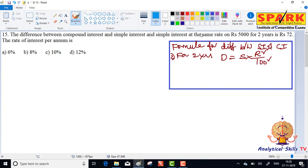And for three years, the difference formula is: difference equal to sum into r cube by 100 cube. The expression is r square into 300 plus r.